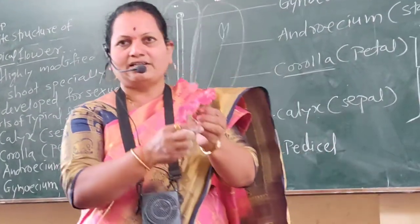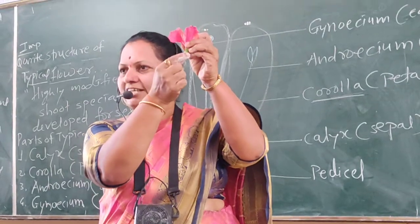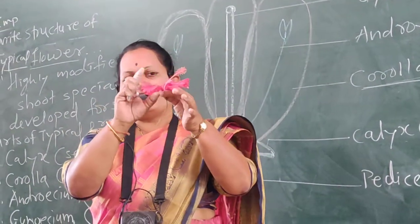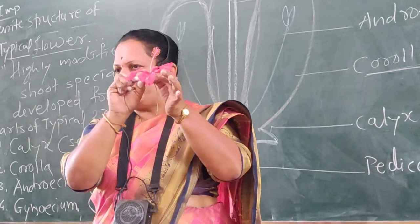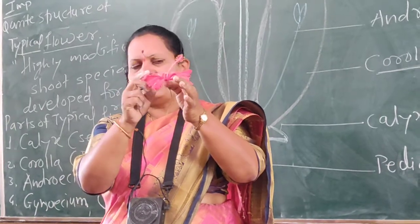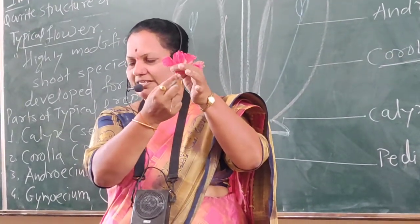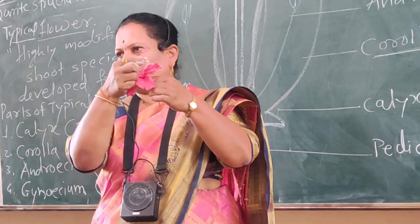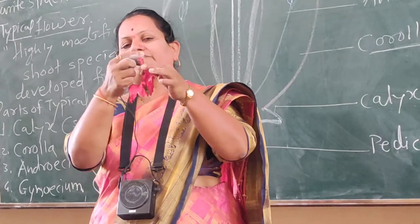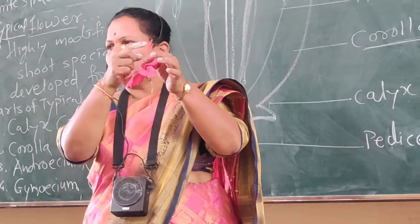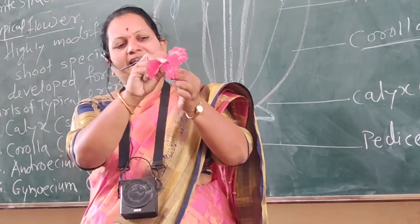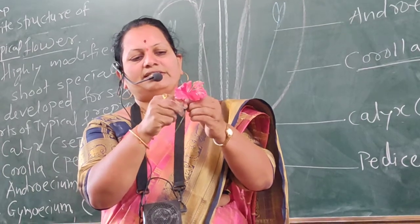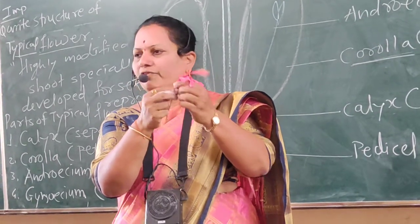In the flower of hibiscus: the calyx is green in color, so its function is photosynthesis and in the bud condition it protects the inner parts. The second whorl, corolla, consists of petals that are bright red in color. In hibiscus, the calyx shows gamosepalous condition and the corolla shows polypetalous condition. The androecium consists of many stamens whose filaments are joined together — monoadelphous condition — and there are five velvety stigmas. The style passes through the staminal tube up to the ovary, which is present at the base. After pollination and fertilization, seeds are produced inside the ovary and fruit is produced from the overall ovary.